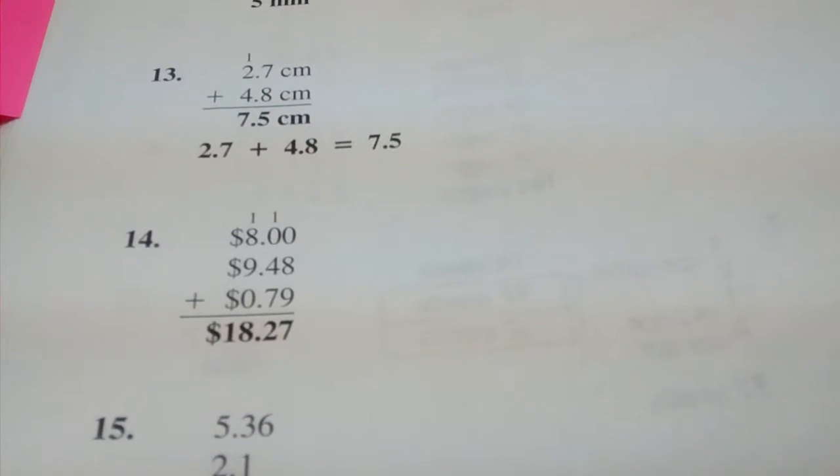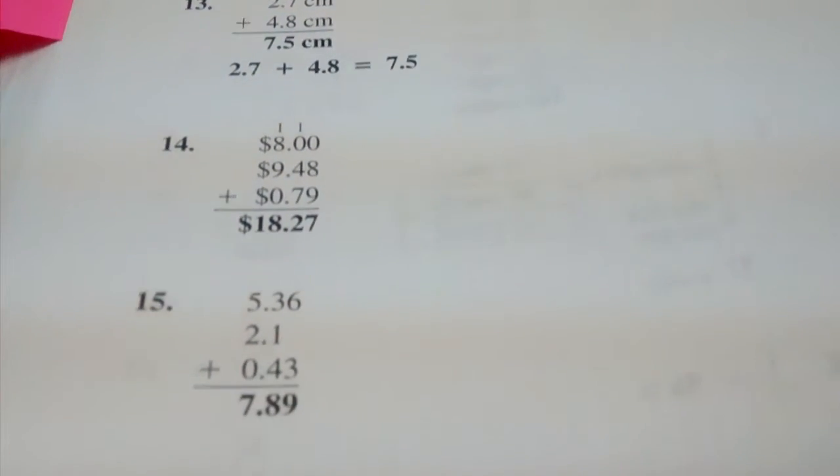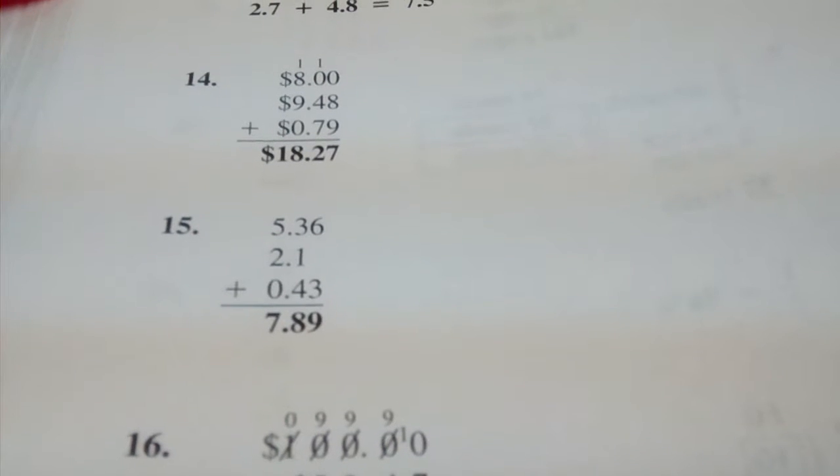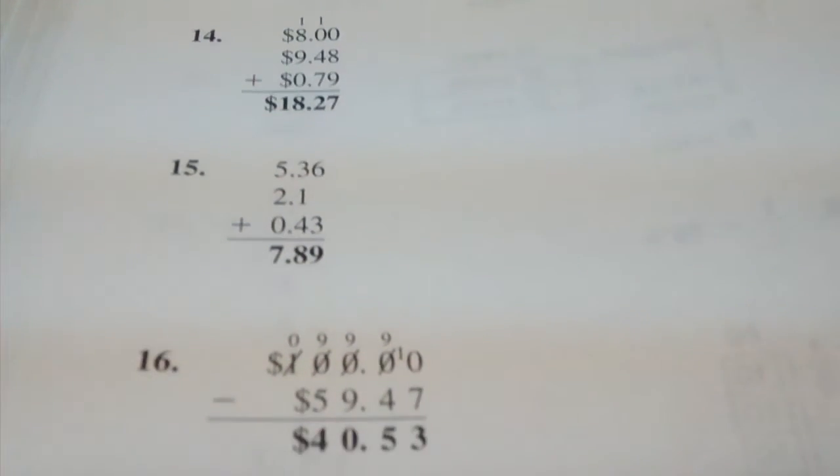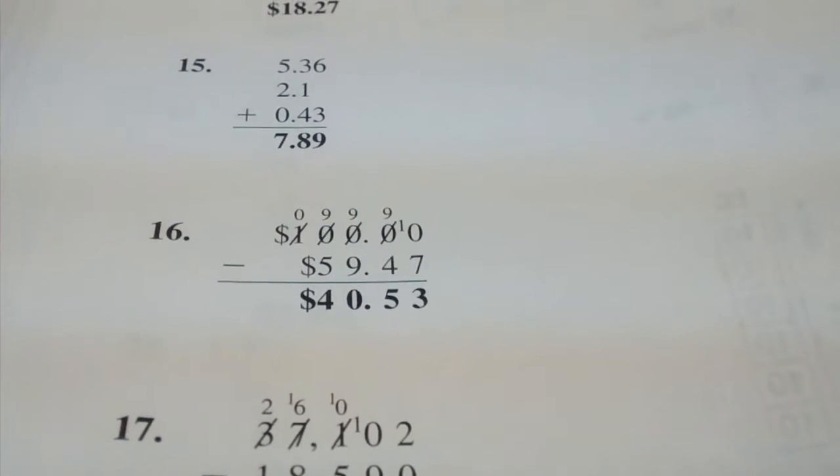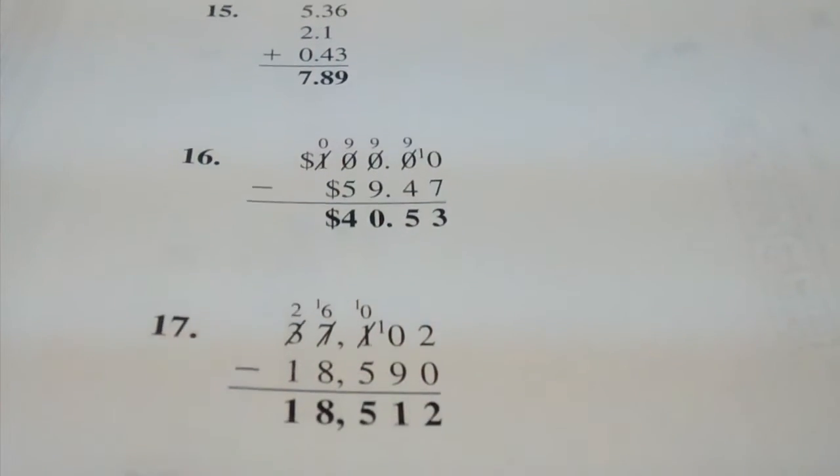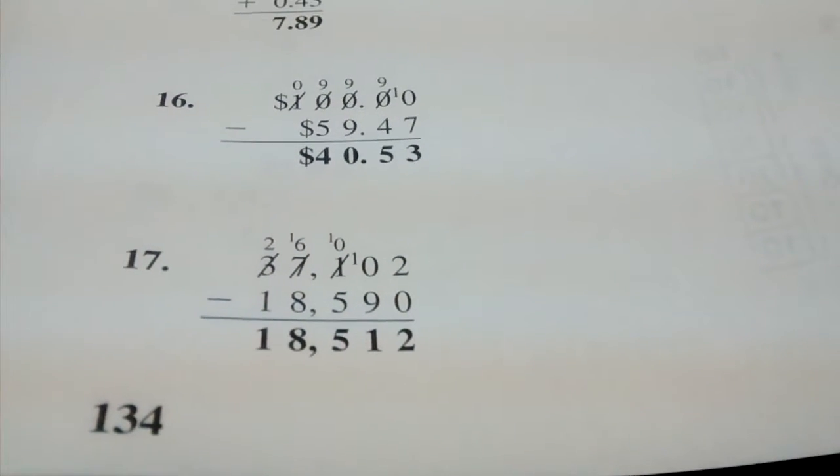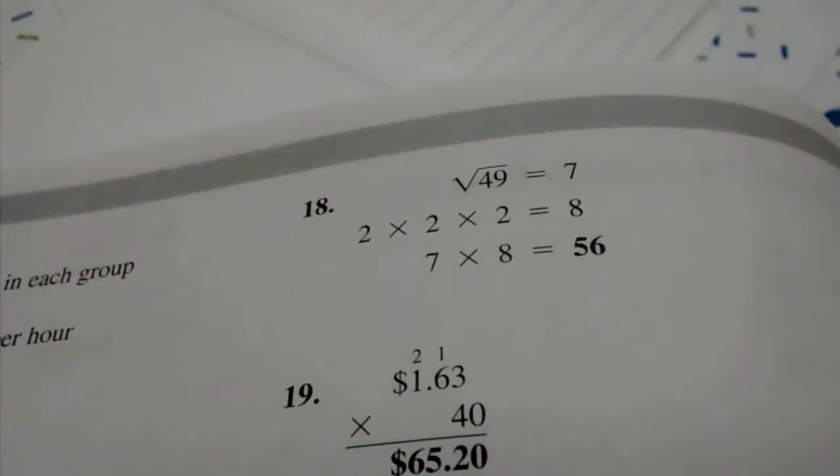Number 14, $18.27. Number 15, 7 and 89 hundredths. Number 16, $40.53. Number 17, $18,512. Number 18, 56.